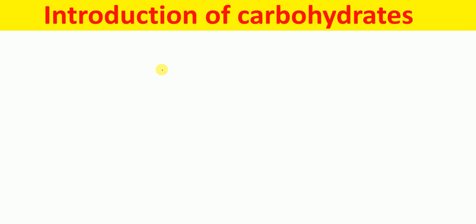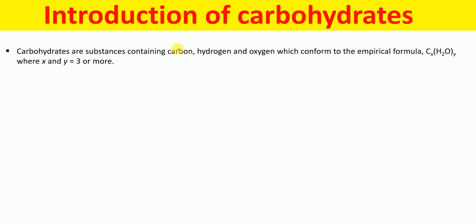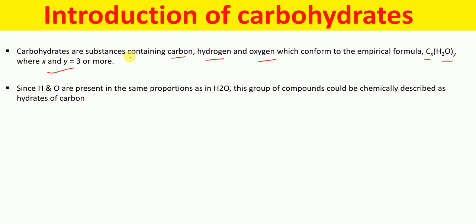So let's first talk about what are carbohydrates. They contain carbon, hydrogen, and oxygen, and they conform to the empirical formula CₓH₂yOy where X and Y are three or more. Since in carbohydrates hydrogen and oxygen atoms are present in the same proportion as in water (H₂O), therefore these carbohydrates are also called hydrates of carbon.